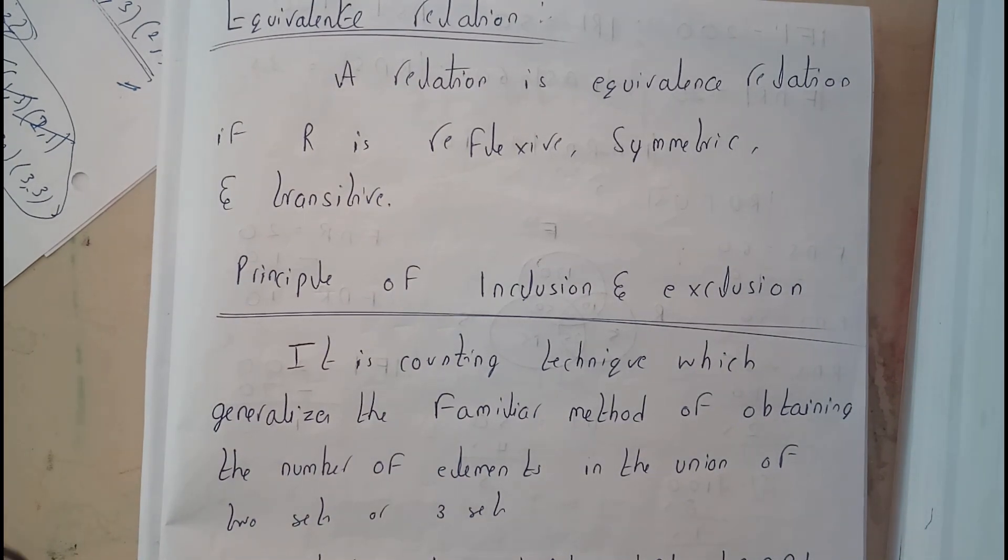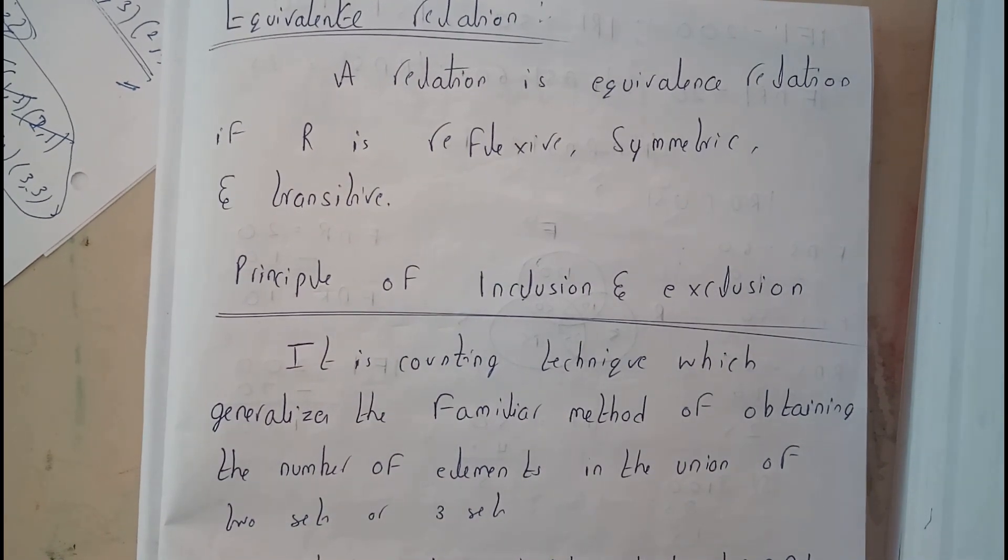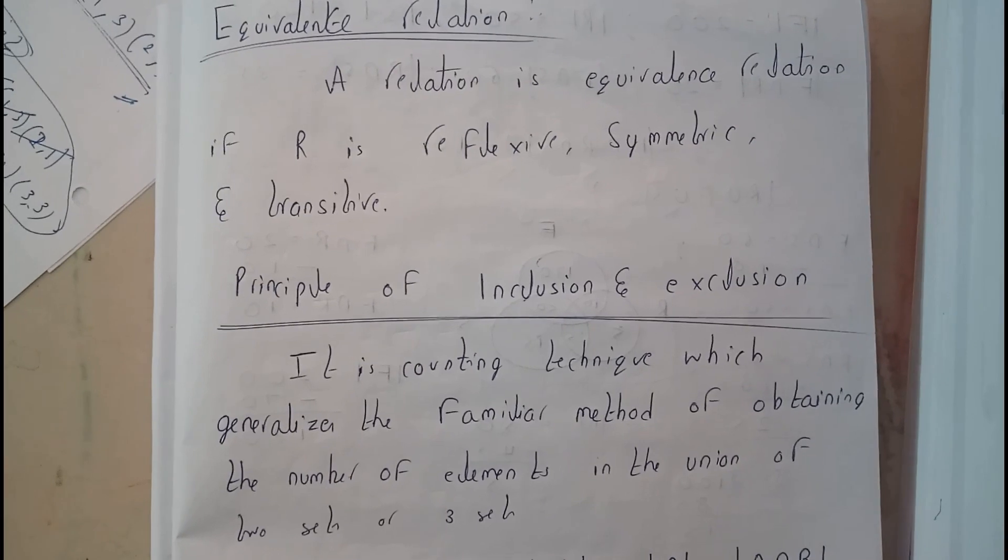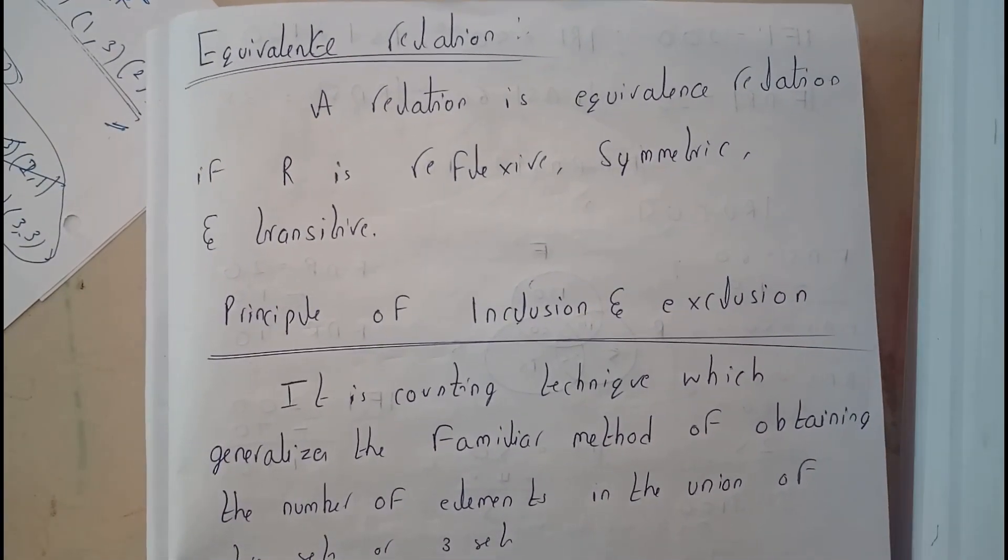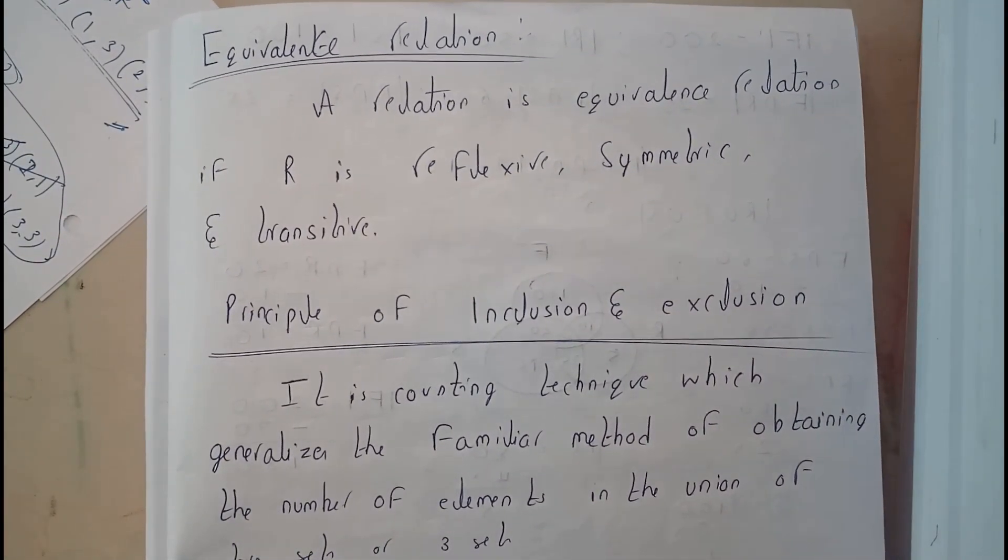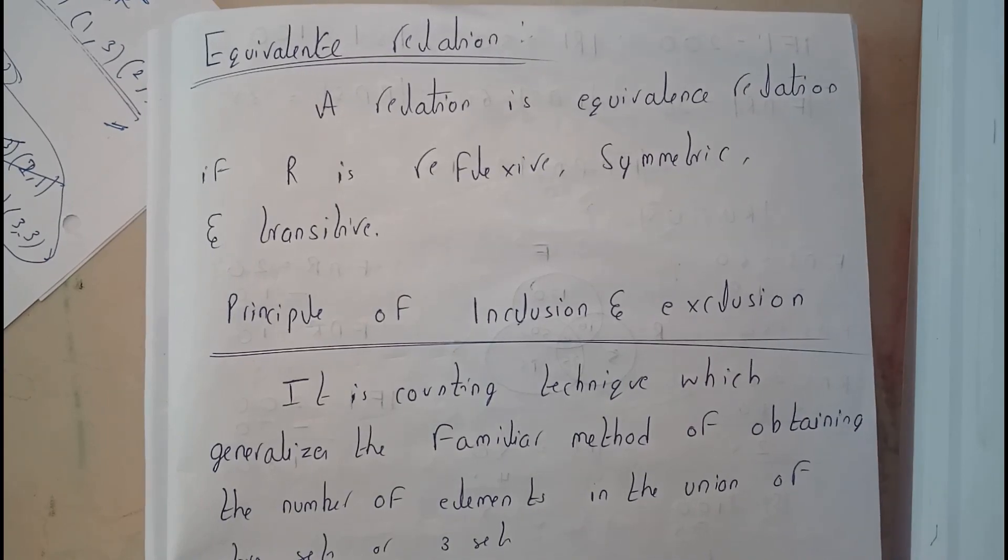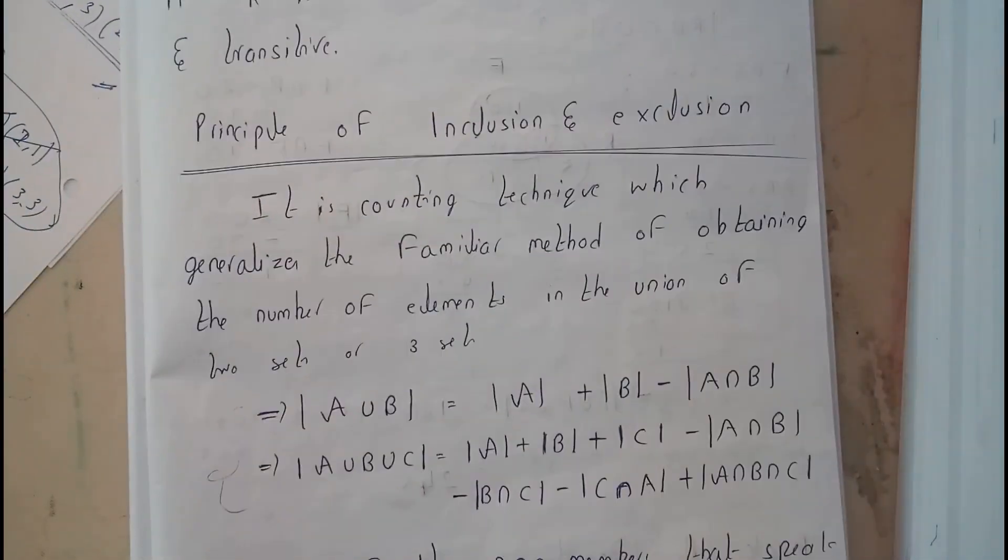Let's go through a small relation. What is equivalence relation? A relation is said to be equivalence if R follows reflexive, symmetric, and transitive. Then it is called an equivalence relation. Let's go further into the principle of inclusion and exclusion.